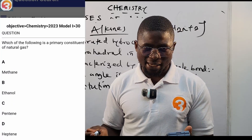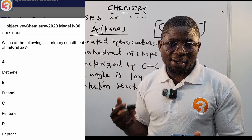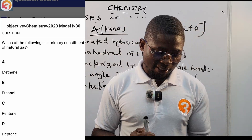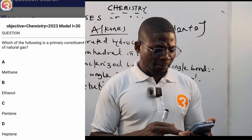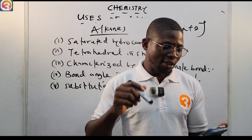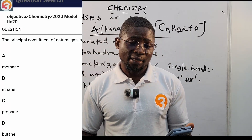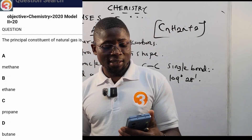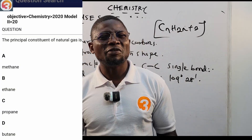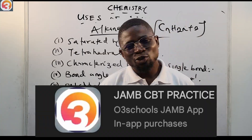2023 question number 30 asks: which of the following is a primary constituent of natural gas? The answer is methane, as seen in option A. Another question from yet another year repeats this: the principal constituent of natural gas is — A) methane, B) ethylene, C) propane, D) butane. The correct answer is again methane.